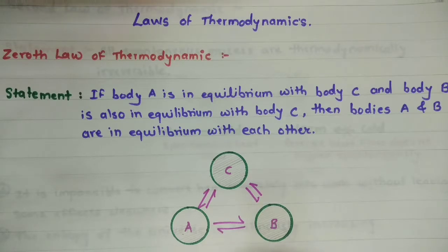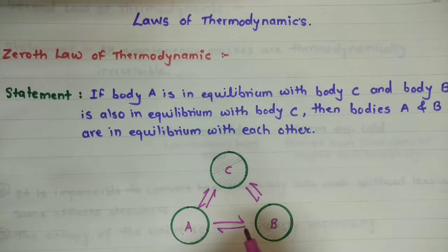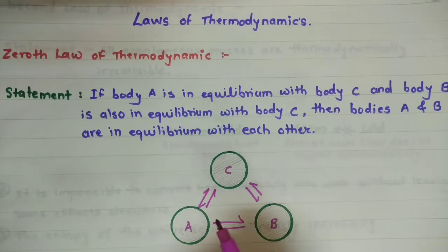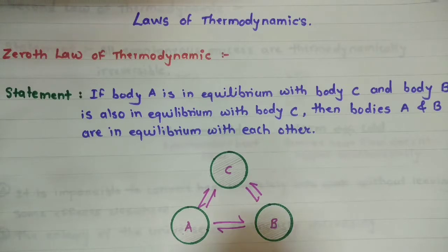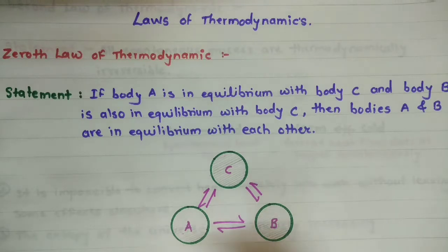This zeroth law is also called the law of thermal equilibrium. If two bodies are in thermal equilibrium with a third body C, then they have equality of temperature with each other. Because of this reason, the zeroth law is also called the thermal equilibrium law, because it talks about the equality of temperature. This law is very simple to understand.